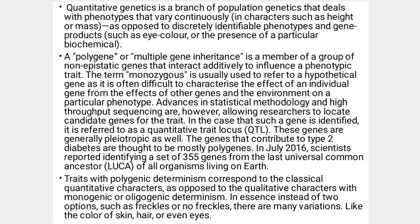These genes are generally pleiotropic as well. Pleiotropy means one gene is responsible for many functions. This is opposite to polygenes or multiple alleles — many genes acting together for one function. The genes that contribute to type 2 diabetes are thought to be called polygenes. So polygene and pleiotropy are opposite to each other.